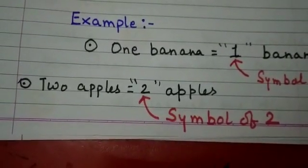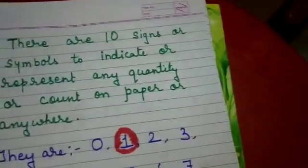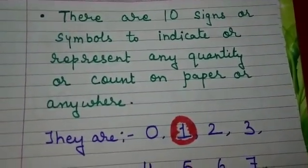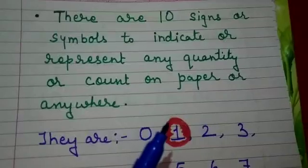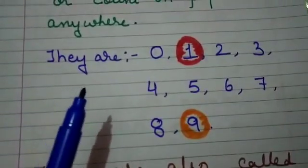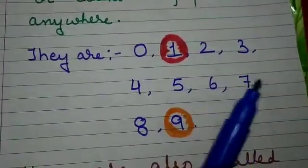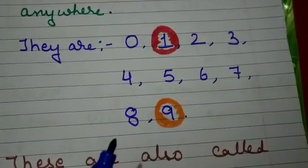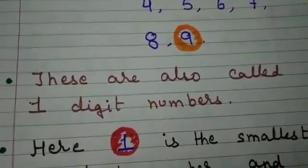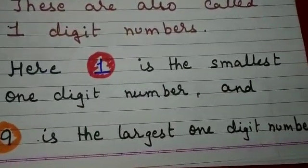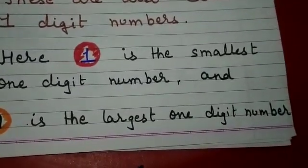Now there are ten signs or symbols to indicate or represent any quantity or count on paper or anywhere. They are zero, one, two, three, four, five, six, seven, eight, and nine. These are also called one digit numbers.